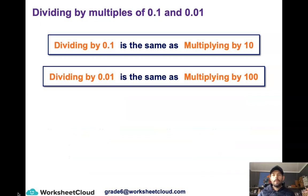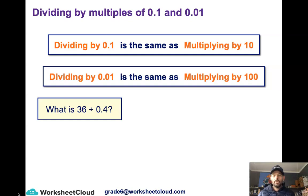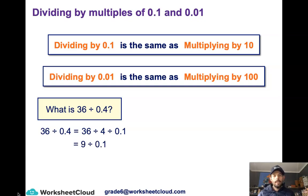When we divide by multiples of 0.1 and 0.01, it's the opposite. Dividing by 0.1 is the same as multiplying by 10, and dividing by 0.01 is the same as multiplying by 100. For example, 36 divided by 0.4: I split 0.4 into 4 divided by 0.1, then 36 divided by 4 is 9, and 9 divided by 0.1 is the same as 9 times 10, which equals 90.